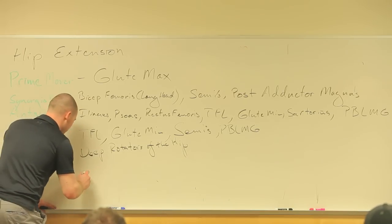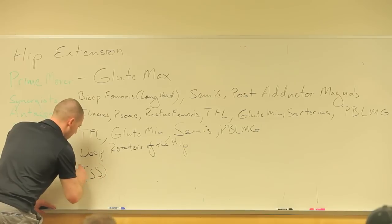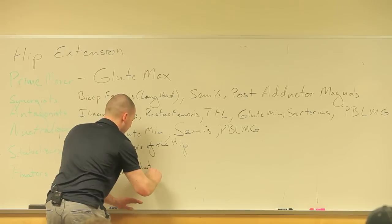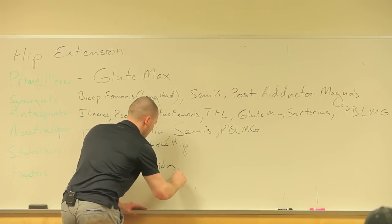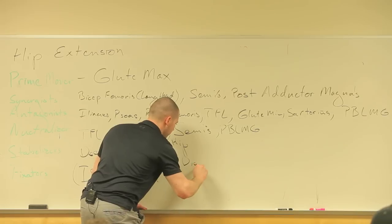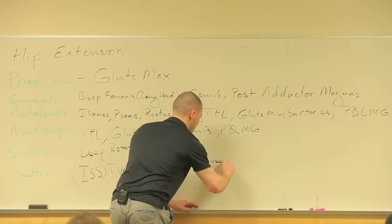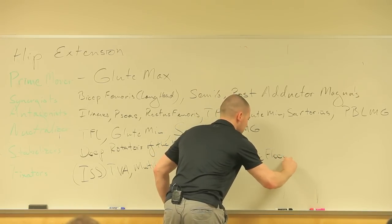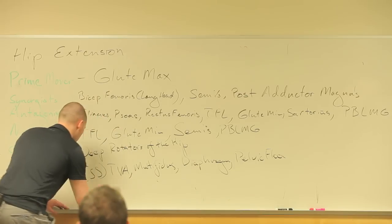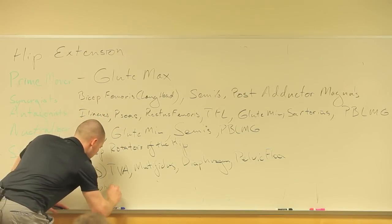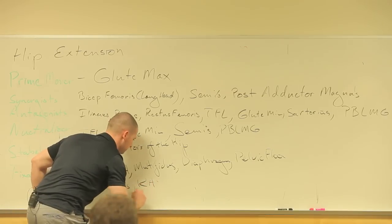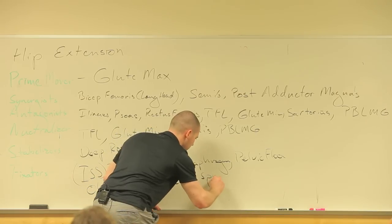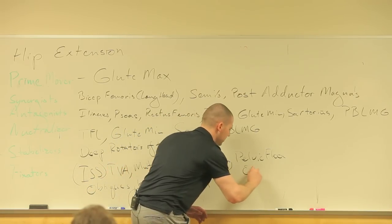Intrinsic stabilization subsystem — what are those? TVA, multifidus, diaphragm, pelvic floor. Keep going — now we're on to our global stabilizers: obliques, rectus abdominis, erector spinae, and quadratus lumborum. Nice job guys, that was quick too.